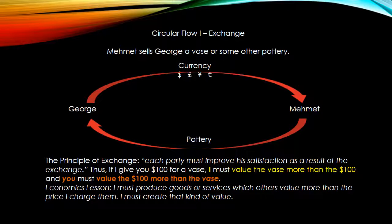When we look at the circular flow in its simplest sense, let's just take a single transaction. In this case, Mehmet is going to sell a vase or some pottery to George. George is going to pay for it in some currency — pounds, dollars, yen, euros. And in here we illustrate a very simple, basic principle, but one that too often people don't understand.